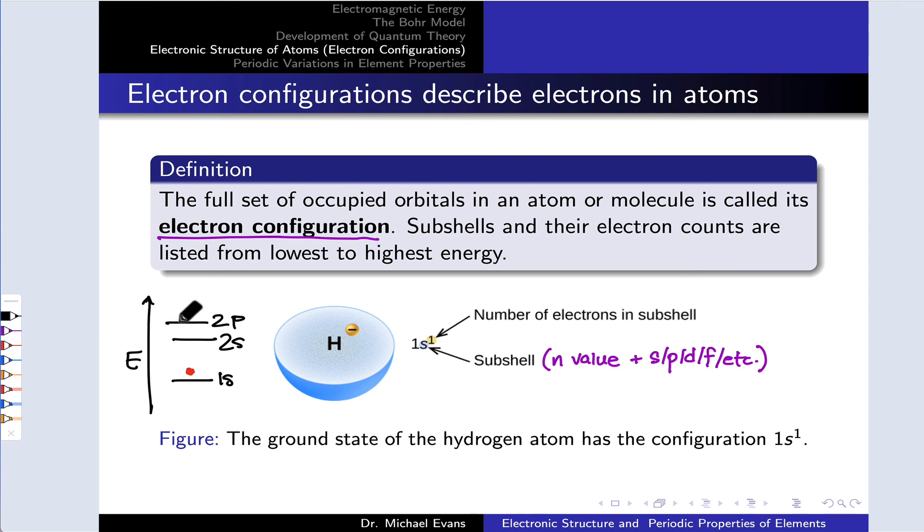And here, I've drawn the 2P subshell as a single line. You'll often see this drawn as three lines to indicate the three distinct orbitals within that subshell. Make sure you understand what you're looking at. It plots the relative energies of the various subshells and, quite often, the number of orbitals within each subshell as well.